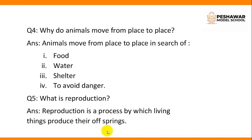Question number 4: Why do animals move from place to place? Answer: Animals move from place to place in search of food, water, shelter, and to avoid danger.